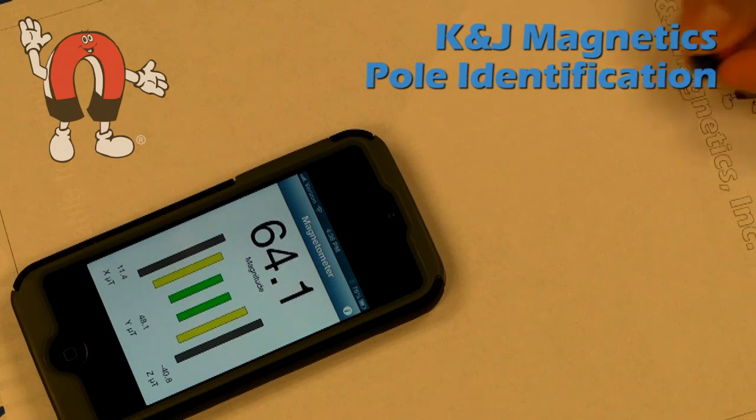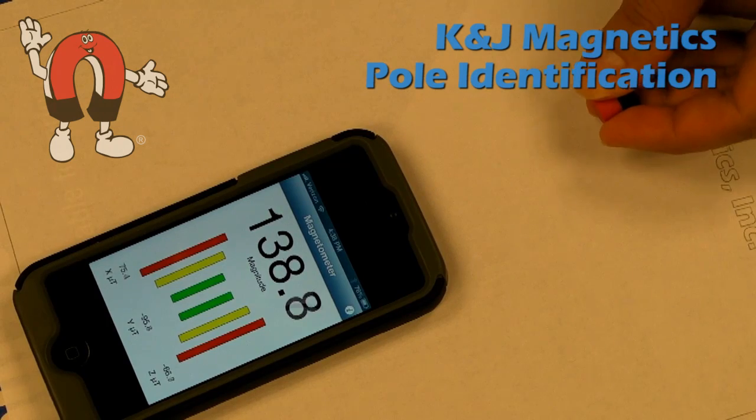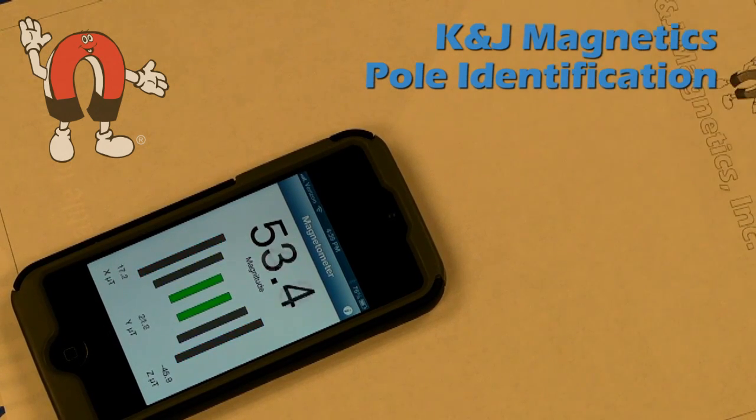When we put the north pole of a magnet near it, you see a negative number, south pole a positive number. We're looking at that, not the big number, but the little one above the Y axis.